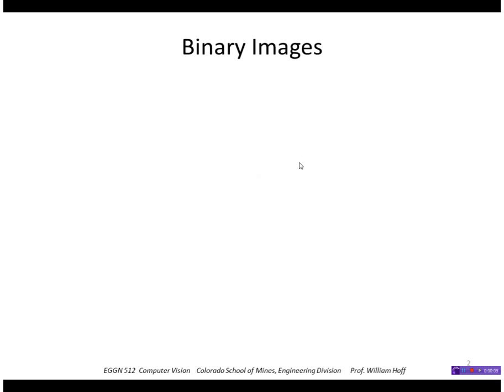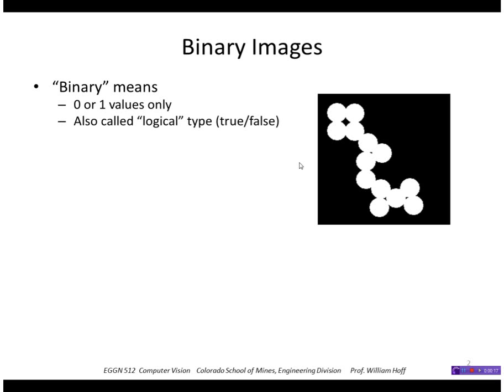What does binary mean? Well, binary means two, zeros or ones. So you have an image that just has two values. You could also think of them as logical with values true or false.